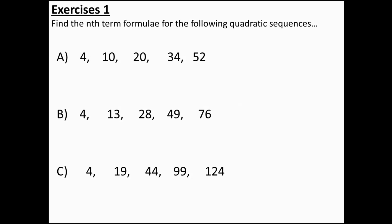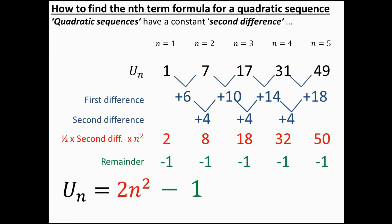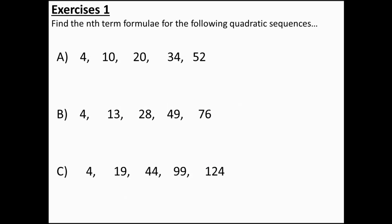Okay, here are some exercises. I recommend you follow this method and lay out your sequence, the differences, and the remainder in just the way I've done. Hopefully you should be able to find the nth term formula for these quadratic sequences with no trouble at all — pause the video and try that now. For the first sequence the nth term formula is 2n squared plus 2. For the second sequence it's 3n squared plus 1. And the third sequence gives 5n squared minus 1. If you didn't get the correct formulae, I strongly recommend going back and checking your working carefully.